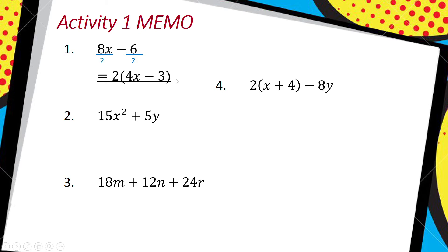I do the same thing for number 2. The highest common factor that goes into 15 and 5 would be 5, so I divide by that. I'm going to say equals 5, open bracket, and then I'll have 3x squared plus 1y, or just y.